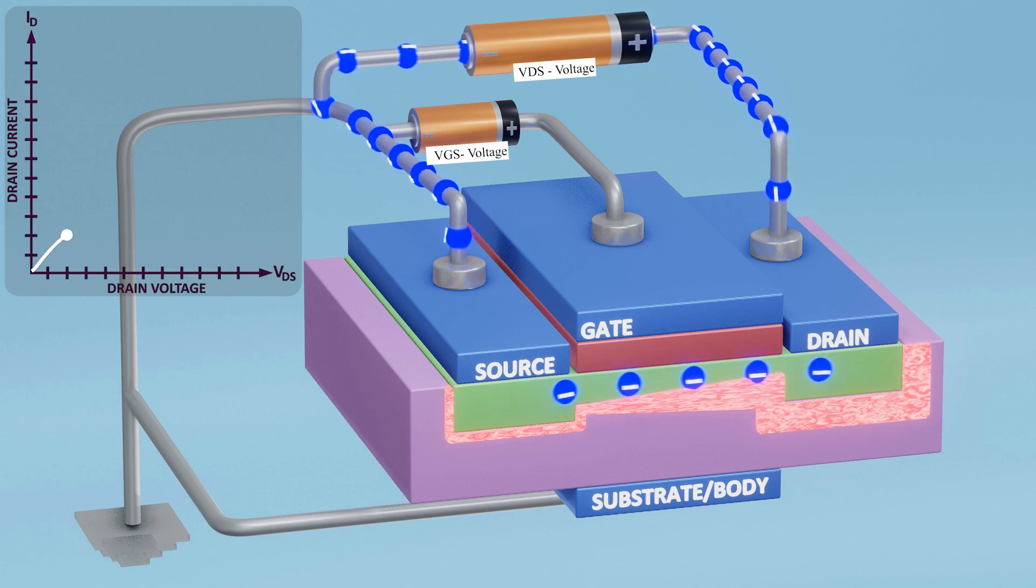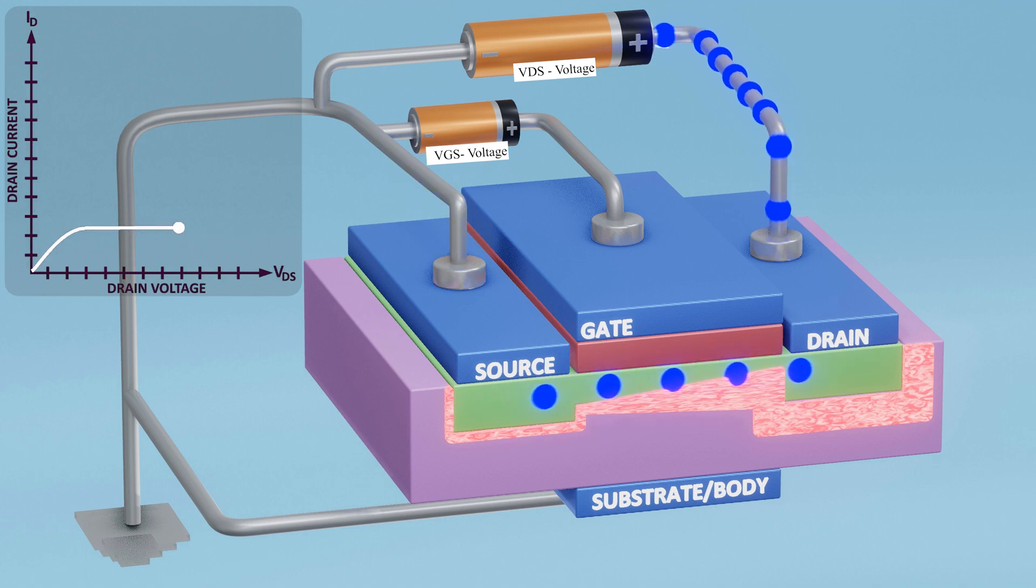At a certain voltage, known as the pinch-off voltage, the channel is almost completely pinched off. However, due to a large number of electrons in the channel, there is a constant saturated current, and the MOSFET operates in the saturation region.